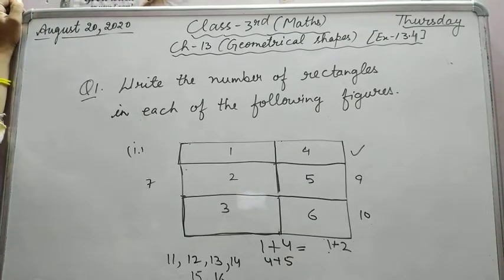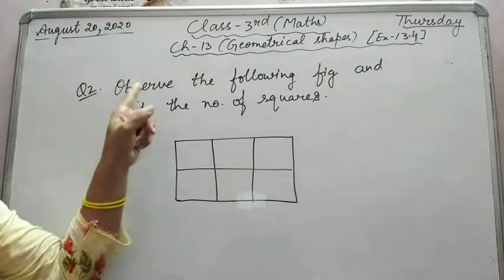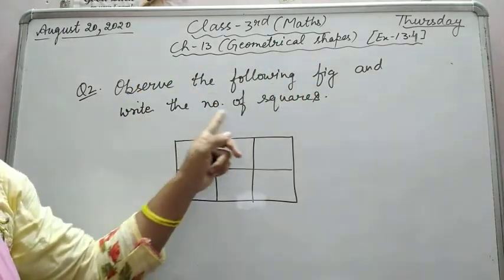Clear, first question is complete. In the second part, you have to do the same, find out in the figure how many rectangles are there. Now come to question number second: observe the following figures and write the number of squares.